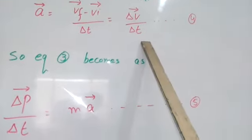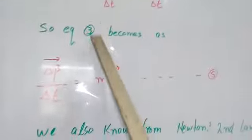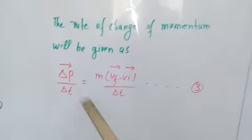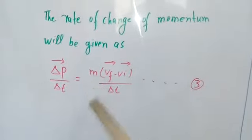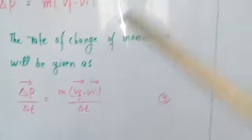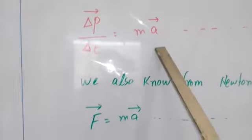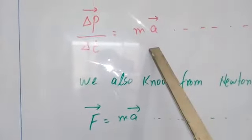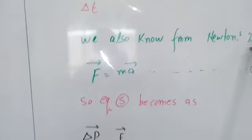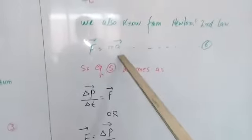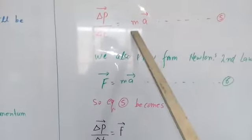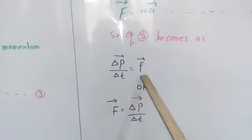यह delta V over delta T से भी लिखा जाता है। Equation 3 से यह M A बन जाएगी — M तो हमने common लिया हुआ है, सिर्फ V_f minus V_i over delta T की जगह पर A आ जाएगा जो कि acceleration है। Newton के second law से force جو होती है M A کے equal ہوتی ہے — ہم نے Newton کا second law detail سے پڑھا ہوا ہے۔ تو equation 5 میں اس کی جگہ پر ہم F put کر سکتے ہیں۔